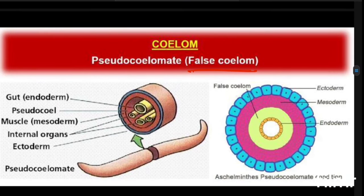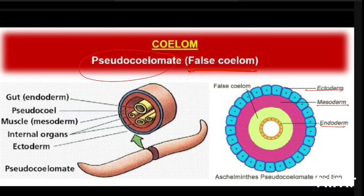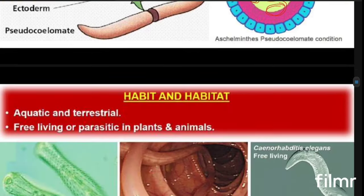Going for the coelom, this is the only phylum which has a pseudocoelom. 'Pseudo' means false — it looks like a coelom but these coeloms are actually not of mesodermal origin. So it is known as pseudocoelom or false coelom. Even though there is ectoderm, endoderm, and mesoderm making them triploblastic, the coelom is a false coelom. There will be small pouches of coelom cavity, not a continuous structure, so that's why it is called pseudocoelom.